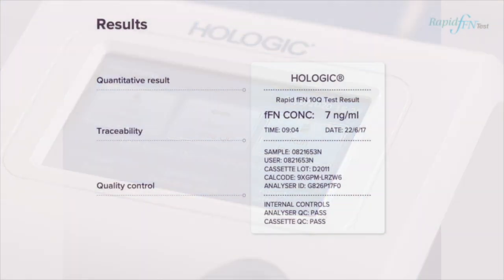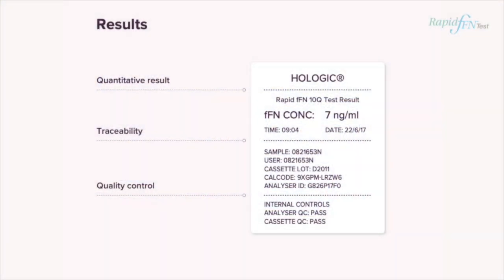With less than 10 minutes of analysis, you will receive a results label which details your quality control, traceability such as user ID and patient number, and your quantitative fetal fibronectin result in nanograms per millilitre. Please refer to your local protocol regarding the management of your patient.